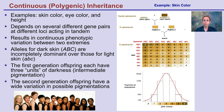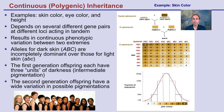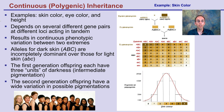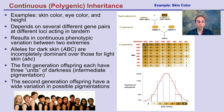Polygenic inheritance involves multiple genes and a spectrum of results. Skin color is a key example, as are eye color and height. It depends on several different gene pairs at different loci in tandem — alleles for dark skin or incomplete elements for light skin. In the first generation of offspring, each individual has three units of darkness and intermediate pigmentation, showing a regression to the mean, with some very light-skinned and some very dark-skinned individuals possible.